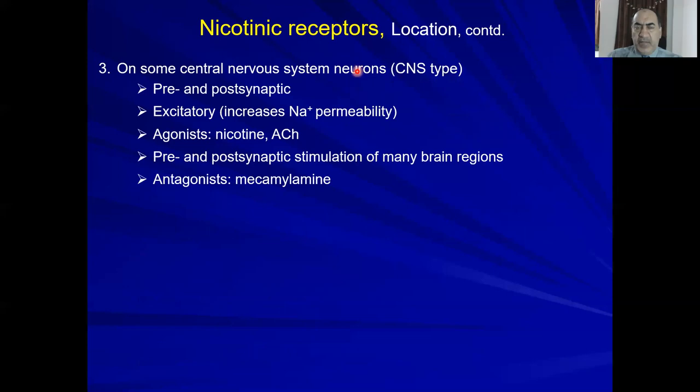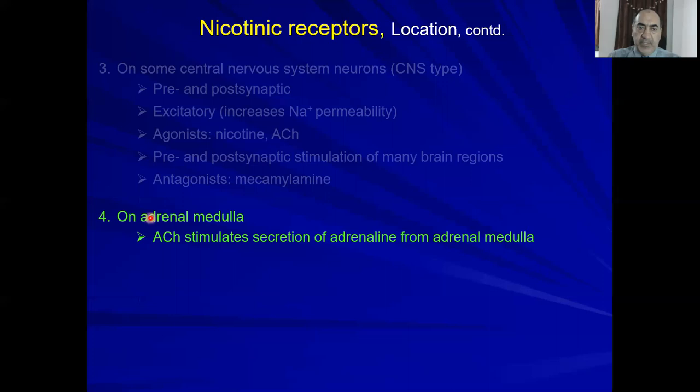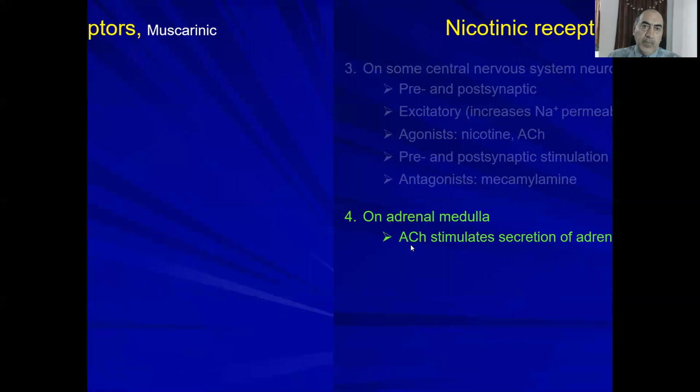The third subtype is the CNS-type nicotinic receptor, located in the central nervous system. It can be pre- or post-synaptic and is excitatory. Agonists include nicotine and acetylcholine; its function is pre- and post-synaptic stimulation of many brain regions. Antagonist example: mecamylamine. The last subtype is on the adrenal medulla, where acetylcholine binds to nicotinic receptors to stimulate secretion of adrenaline.